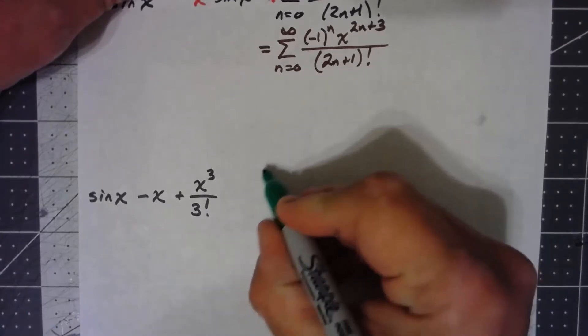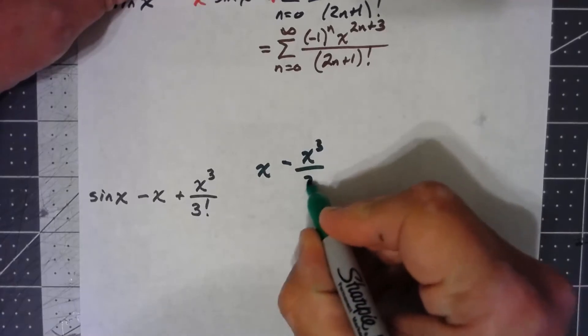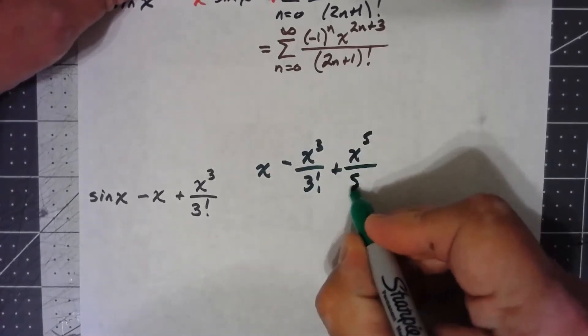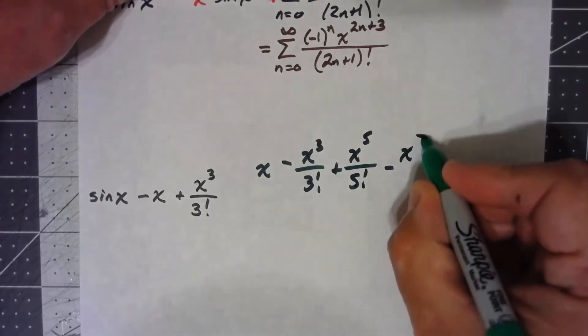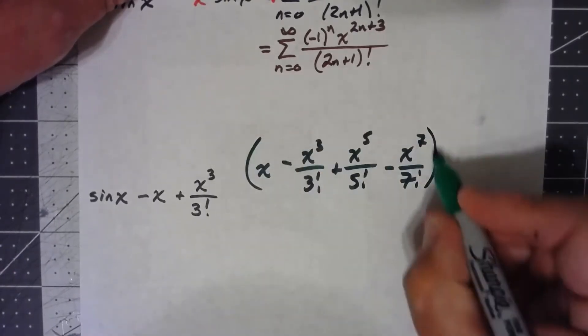So, for sine of x, it's x minus x cubed over 3 factorial plus x to the 5th over 5 factorial minus x to the 7th over 7 factorial, and so on like that.